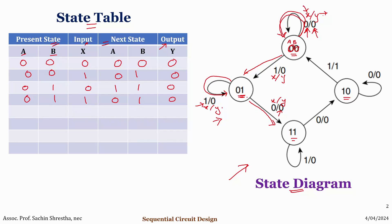Now let's move to the next state which is 1 1. If the present state is 1 1 and the input X is 0, then it will change to 1 0, and in that case the output Y is 0. If from 0 1 the input is 1, the state will report back to the same state 0 1, and in that case the output is 0. And if from 1 1 the input is 1, it changes back to 1 1, the same state, and in that case the output is 0.